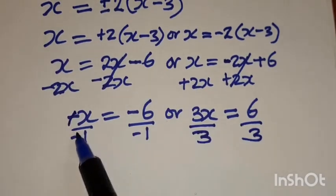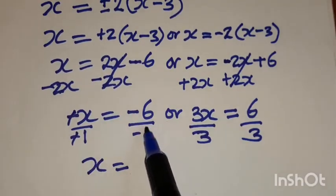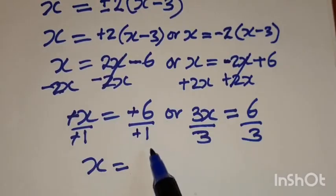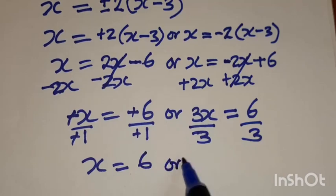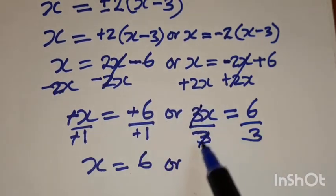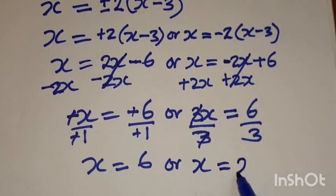So negative negative will be positive. So we have x is equal to negative 6 divided by negative 1 to be positive 6. Or this 3 will cancel. x is equal to 6 divided by 3 is 2.